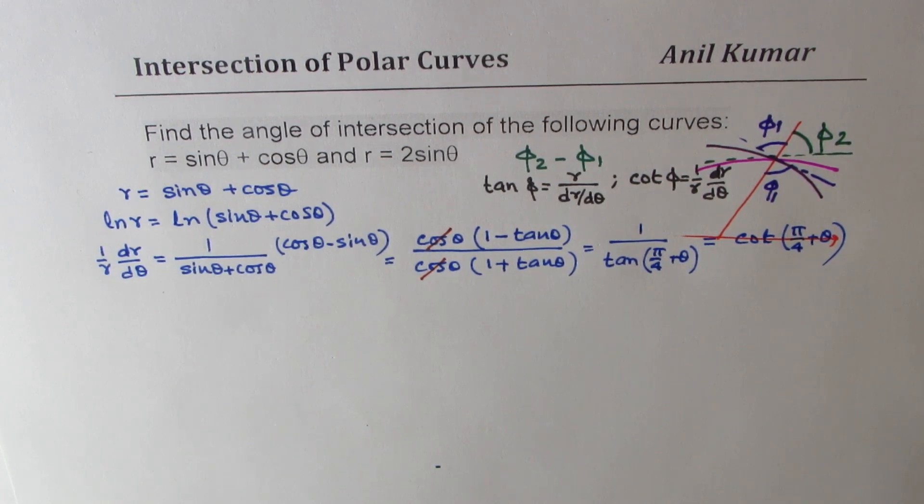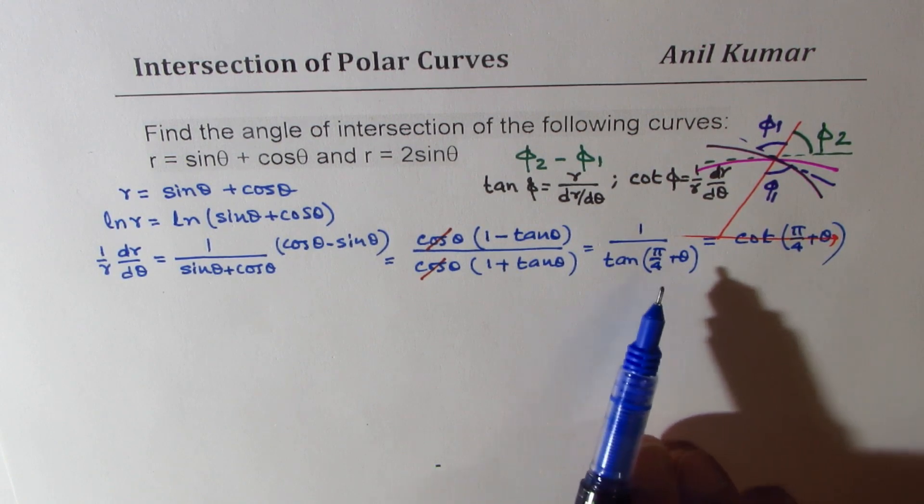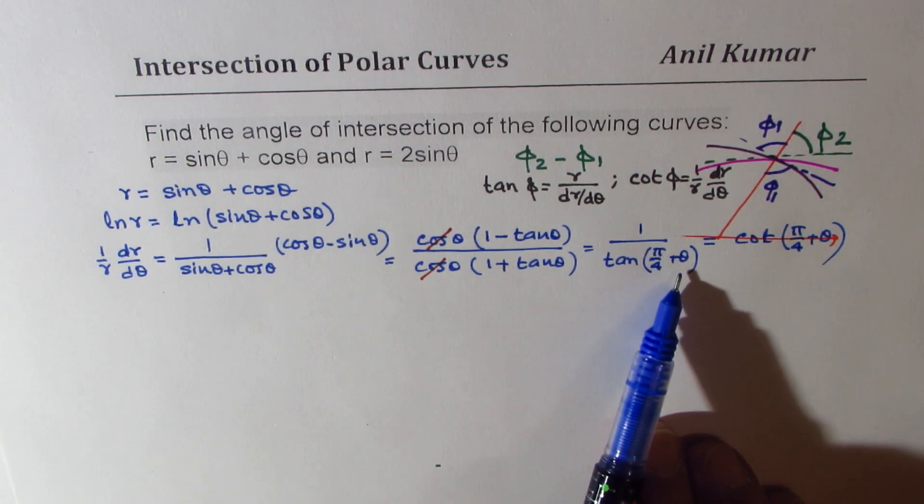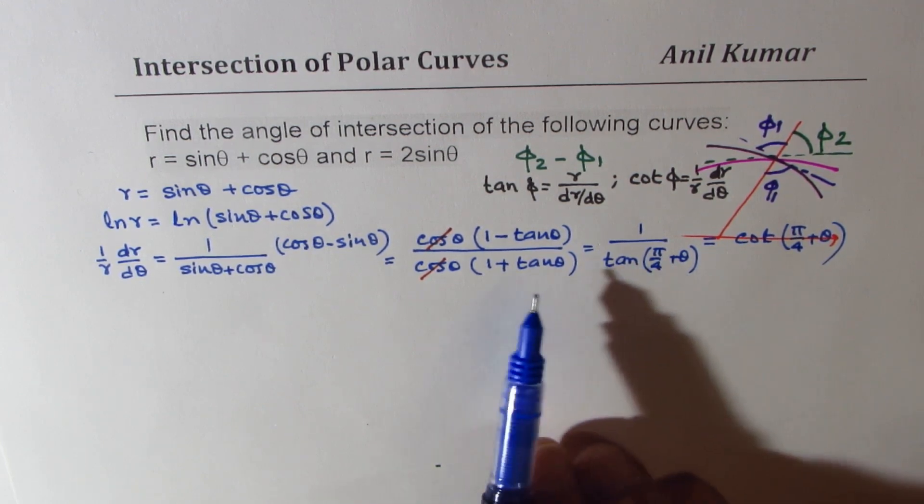So a lot of trigonometry gets into this. So you should remember tan a plus b formula, and if a is pi by 4, tan pi by 4 is 1, and so you get this.